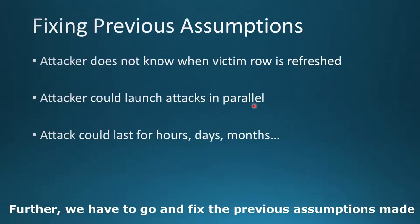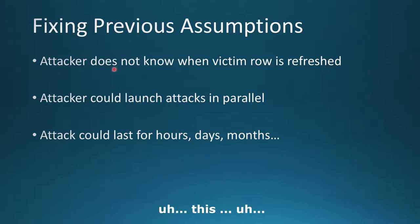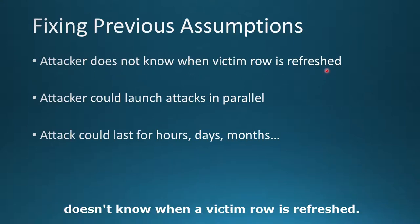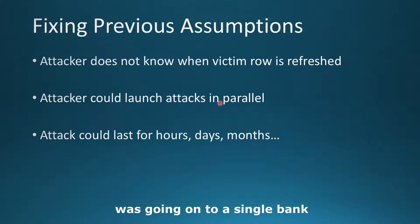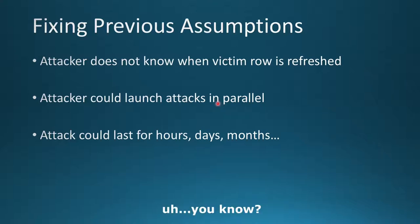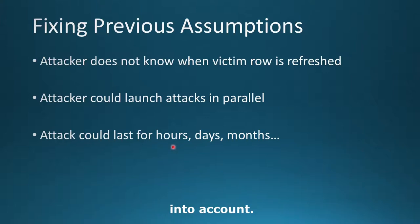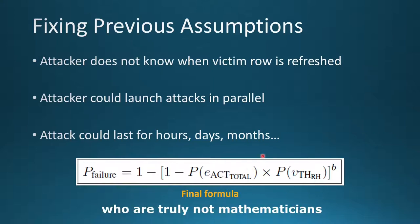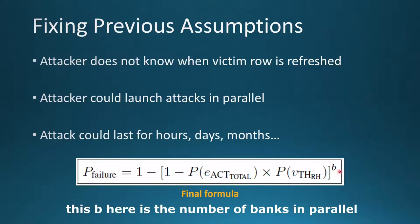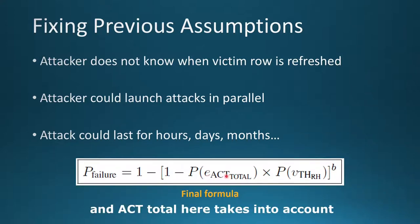Further, we fix the previous assumptions as described. We assume the attacker doesn't know when a victim row is refreshed. We also assume the attacker can launch attacks in parallel — previous work assumed the attack targets one single bank, but we want to be holistic about an entire system with multiple banks in parallel. Finally, the attack could last for a lifetime of hours, days, or months, so we take this lifetime parameter into account. This is our final formula. B here is the number of banks in parallel, and ACT_total takes into account the lifetime of the system.